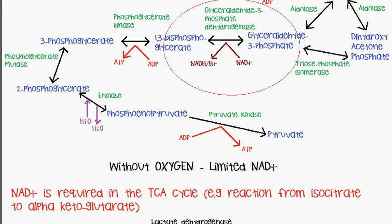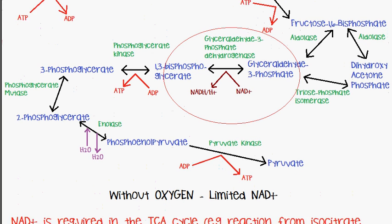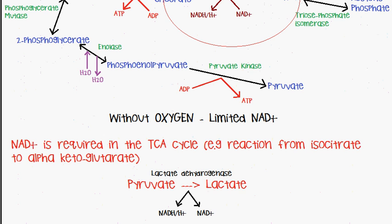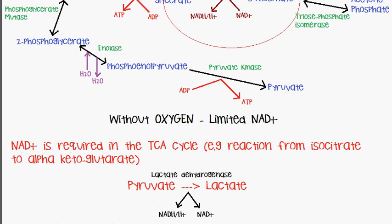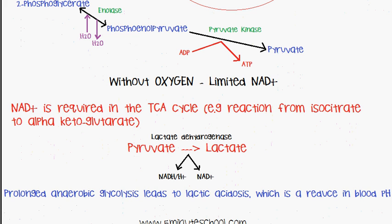When there is no oxygen or limited amounts of oxygen and the body still requires energy and the TCA cycle is still occurring, the body needs to resynthesize as much NAD+ as possible. What happens is it uses pyruvate and converts it into something known as lactate, which is catalyzed by the enzyme lactate dehydrogenase. This reaction helps to resynthesize NAD+, which can then be used in the TCA cycle.